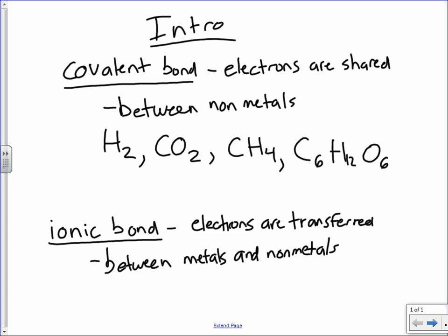Okay? So some examples would be, you know, NaCl, Na being a metal, chlorine being a non-metal. You've got FeBr3, iron bromide. Okay? Or calcium carbonate, CaCO3. Okay? These are ionic compounds from ionic bonds.